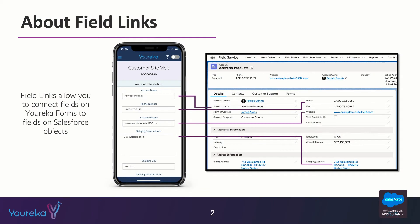So an example might be, as we look at the slide here, we might have a form that we want our users to be filling out inside of Eureka that is going to map data over to an account record. We can see on the left that we have some questions inside of our Eureka form template. This one is a customer site visit and those four fields are going to map information over to the account record inside of Salesforce as soon as somebody clicks submit.